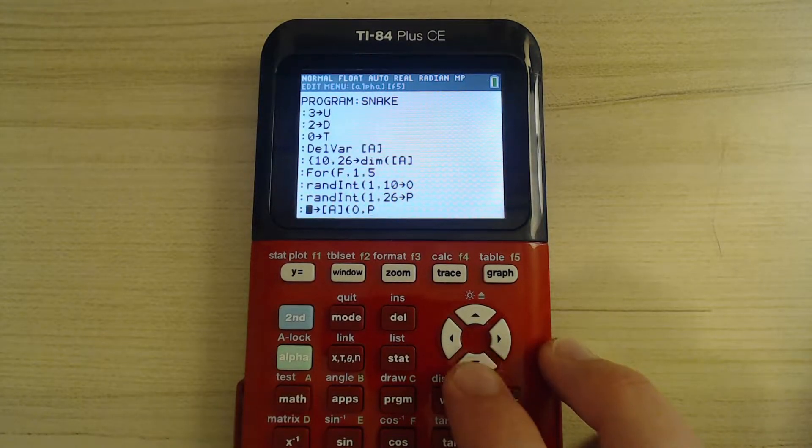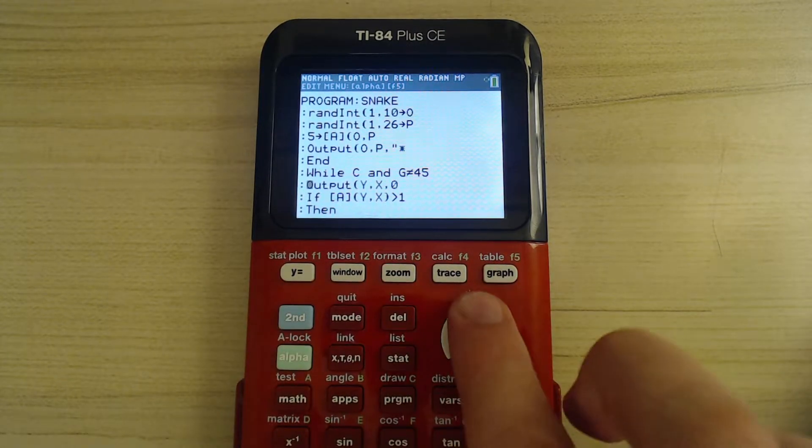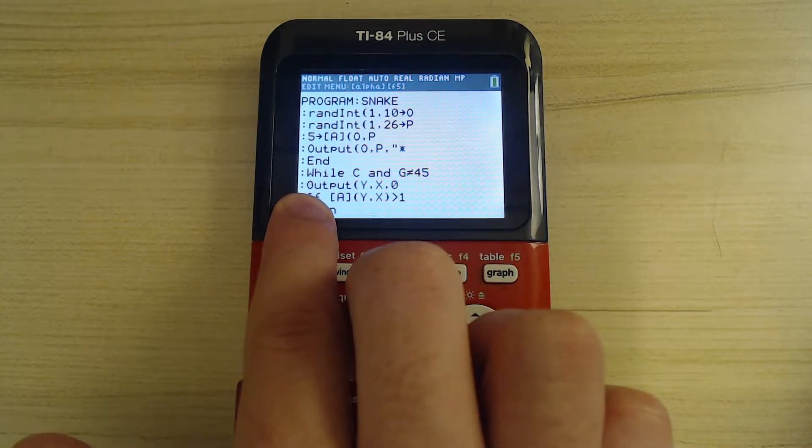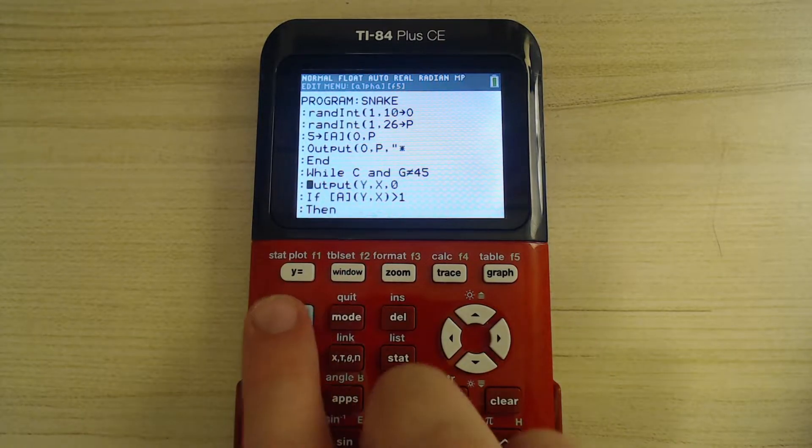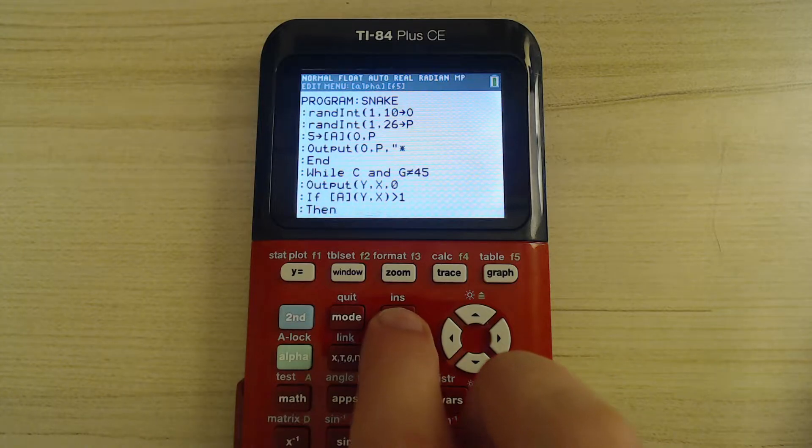We're going to scroll all the way down to the while line, so right here. Now you're going to hover over this O right here on output. You're going to press second del. Now we're in insert mode. That's what ins stands for in blue.